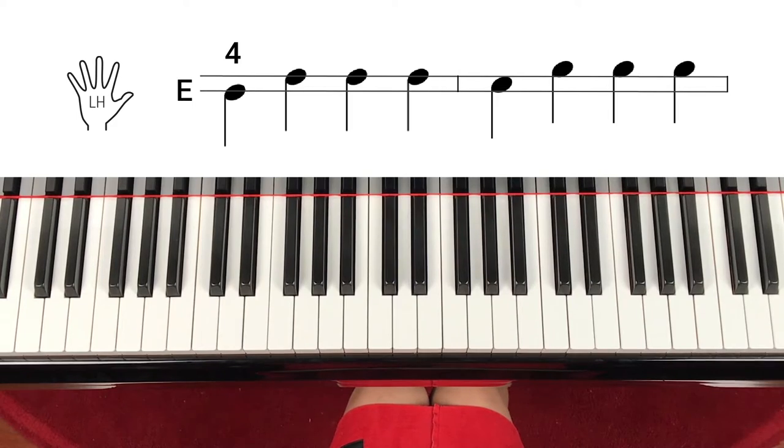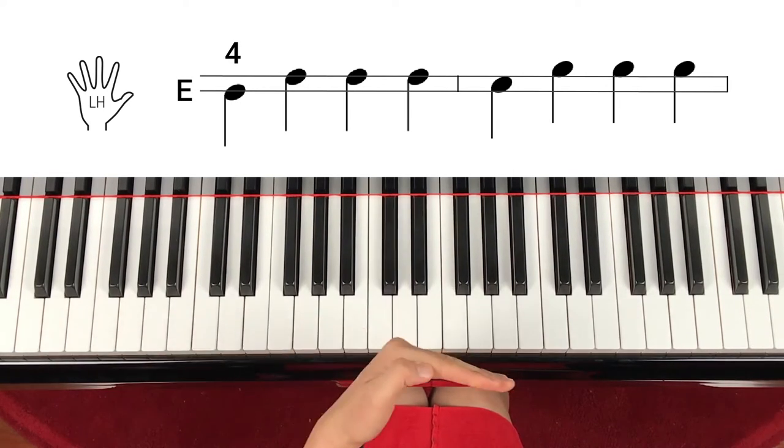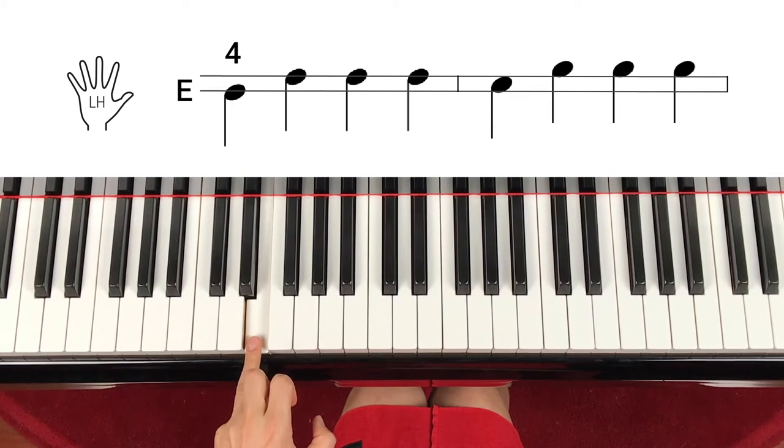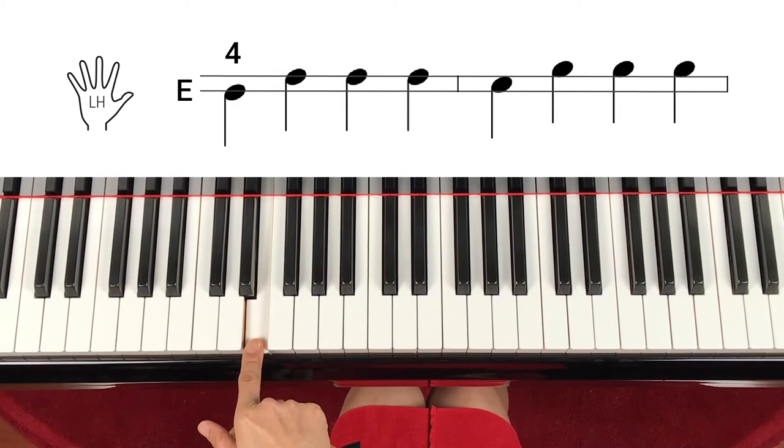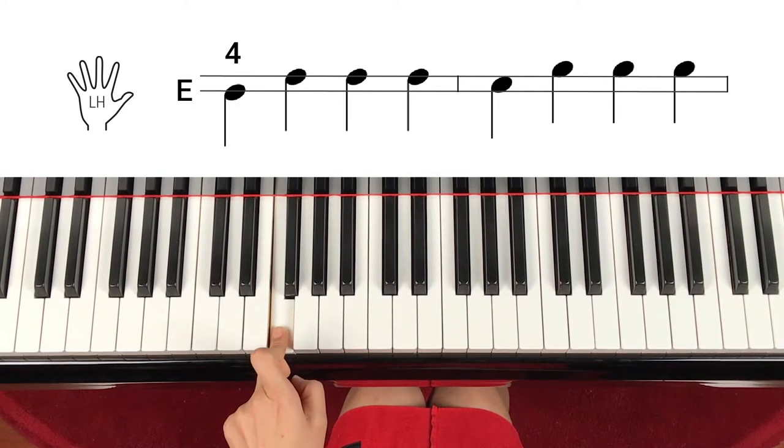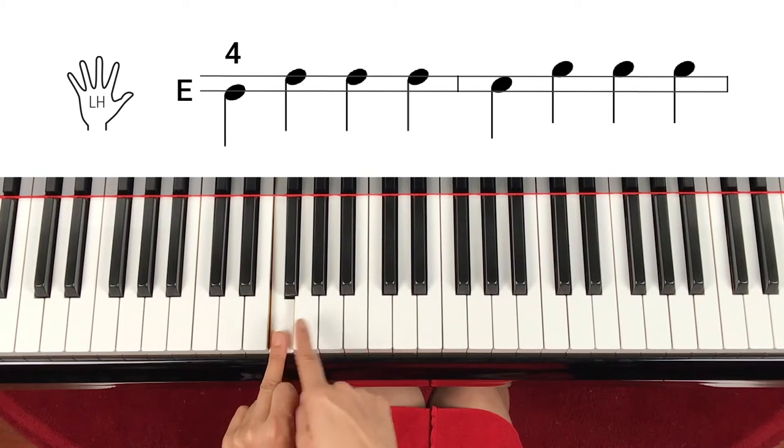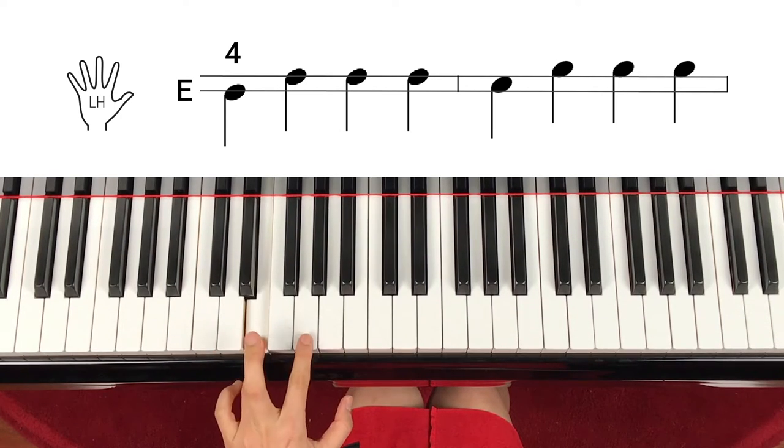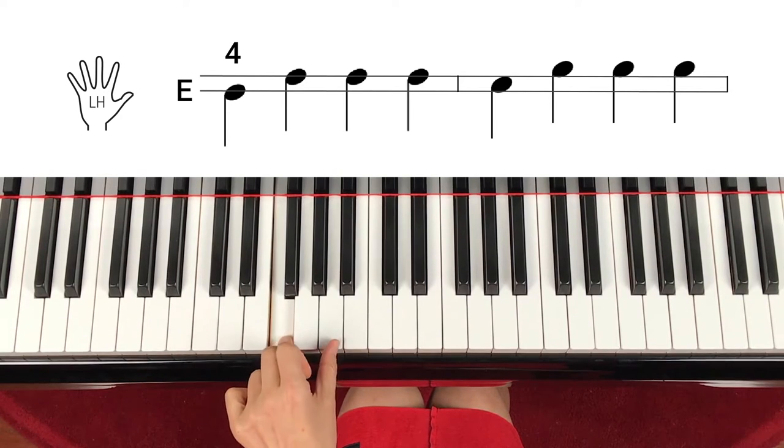Now first let's find left hand. Left hand starts on E. The bottom line is on E so maybe let's try it on this E with the finger number four. Next note is skip off from the E. So we'll be here and repeat, repeat, and the following note is step down and space to space. So it's another skip from here. That's the left hand. Kind of simple right? So E, skip, repeat, repeat, step down, skip.